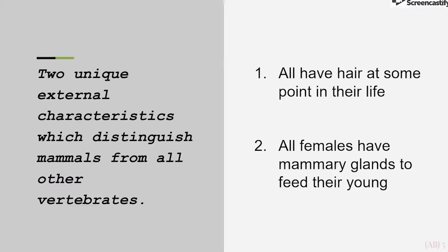Pre-lab question number 3 asks: what are the two unique external characteristics which distinguish mammals from all other vertebrates? 1. All mammals have hair at some time during their development, and 2. All female mammals possess mammary glands with external openings for nourishing the young.